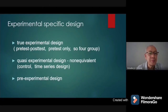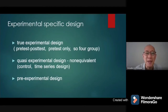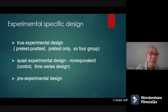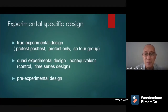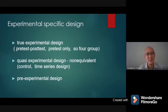The last type of experimental specific design is the pre-experimental design. It is called 'pre' because before you do the main experiment, you have a testing period to assess whether the group is worth experimenting on. A good researcher will do the pre-experimental design first before proceeding to true experimental or quasi-experimental design. It is not a major requirement, but it is better to do it first.